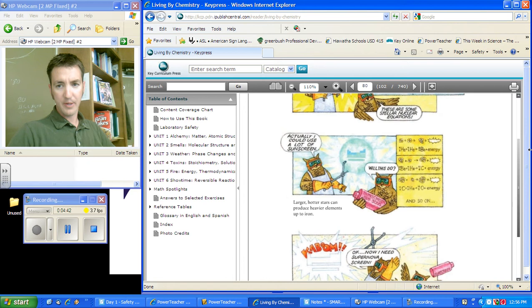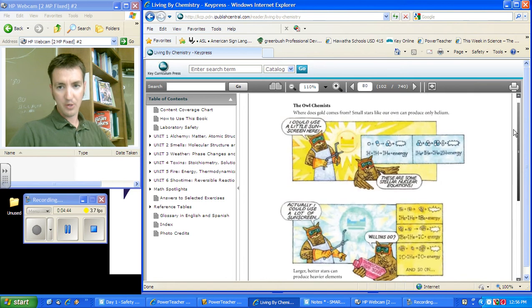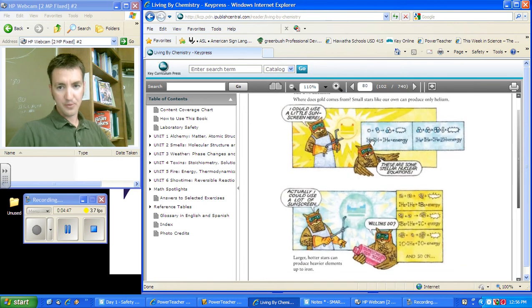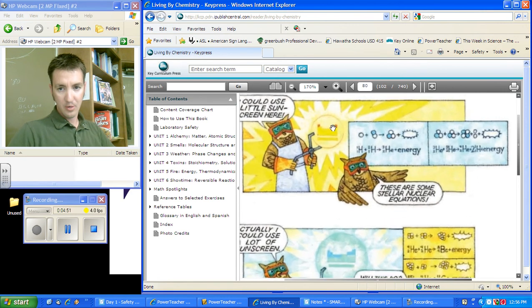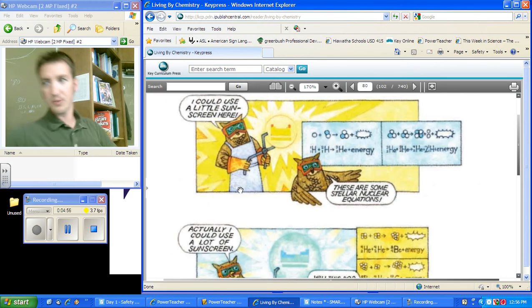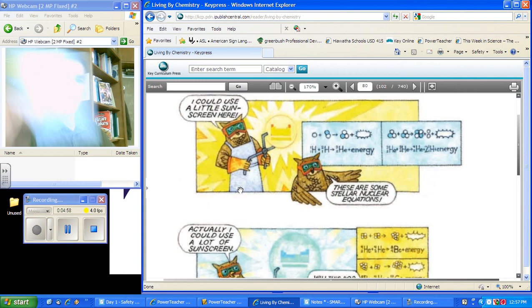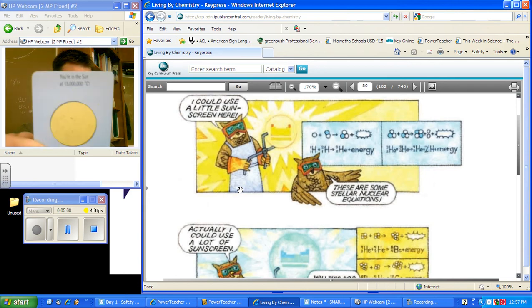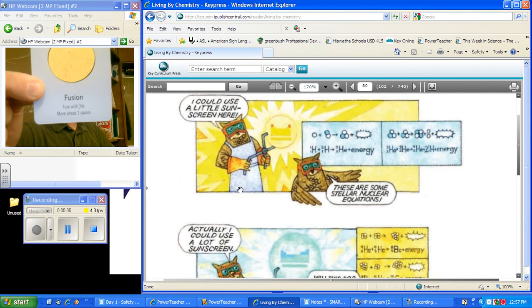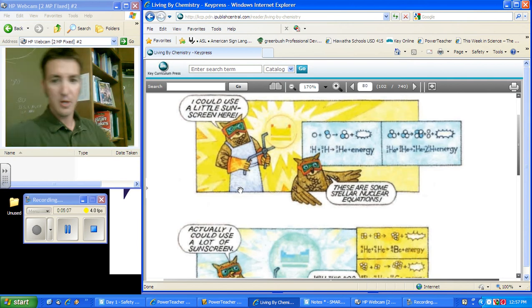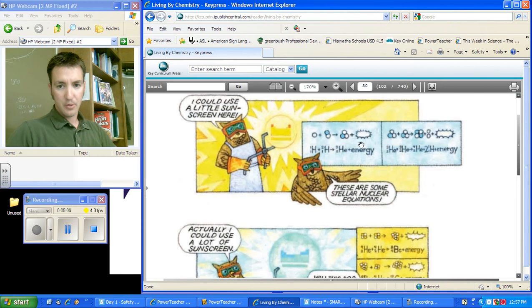Basically, in stars, you've got fusion. So, you've got two hydrogens that are going together and they're making a new element. So, on our card game we had this card. So, our sun, 15 million degrees, fusion, we can move two spaces. Basically, it's just pushing two of these little atoms together and making a new one and releasing a bunch of energy.